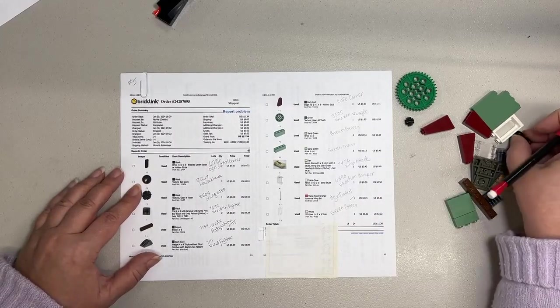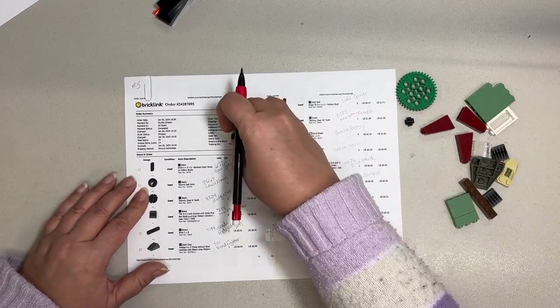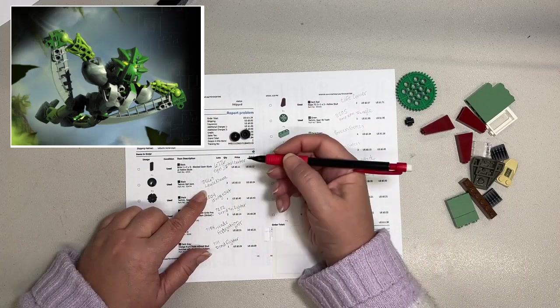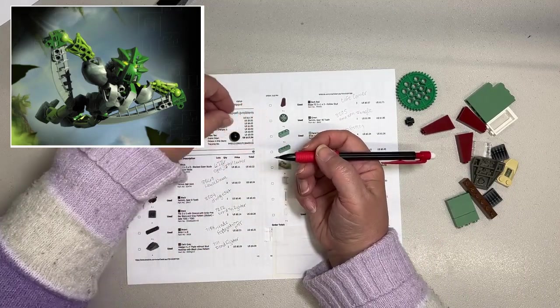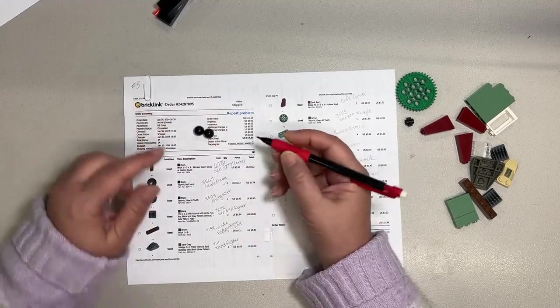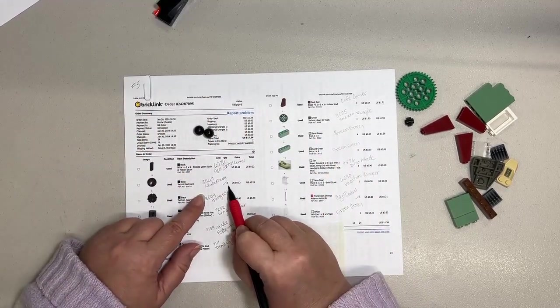The two Technic Balls are for a Bionicle set, Lua Nuva. Like I've said before, I'm not a Bionicle person, so I probably say these names all wrong. This one I actually already have on eBay.